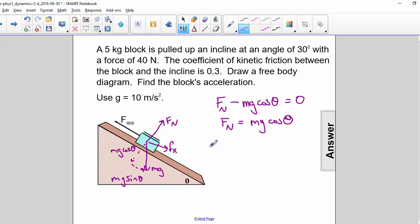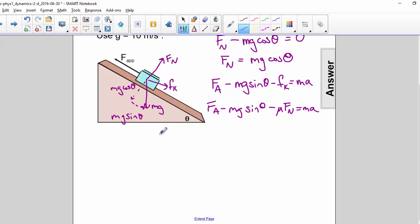Now for our x-axis, we have force applied minus mg sine theta minus force of friction equals ma. So we need to replace our force of friction with mu times normal force. And now we'll replace the normal force with mg cosine theta.